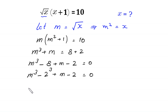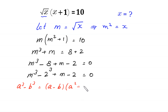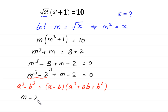Now, by using this algebraic identity: a cubed minus b cubed is equal to (a minus b) times (a squared plus ab plus b squared). This m cubed minus 2 cubed can be factorized as (m minus 2) times (m squared plus 2m plus 4).